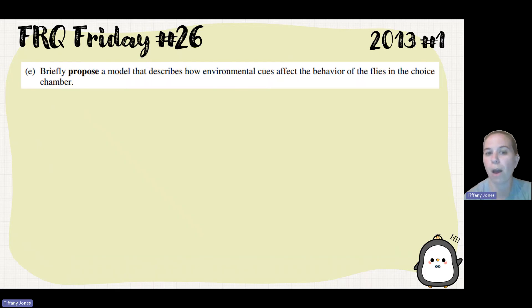Part E is to briefly propose a model that describes how the environmental cues affect the behavior of the flies in the choice chamber. So in this one, you had to give me some type of stimulus with some type of response, or you had to talk about the input, type of integration taking place in the brain, and then an output.